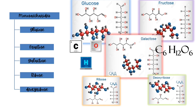Galactose is found in dairy products such as cheese, milk, avocados, sugar beets, gums, and mucilage. Common among all monosaccharides is that they are formed from a long chain of carbon with the same chemical composition. What makes them different from one another is the position and arrangement of their atoms and the functional groups they are attached to.